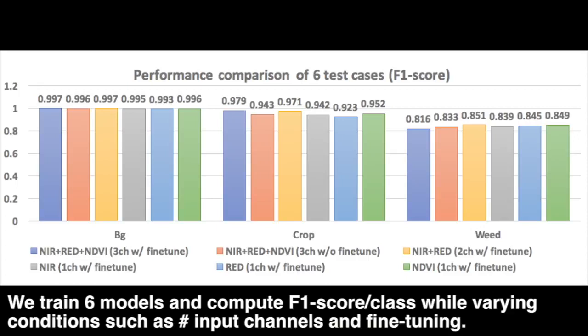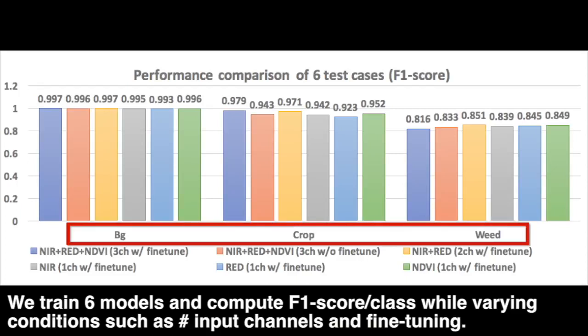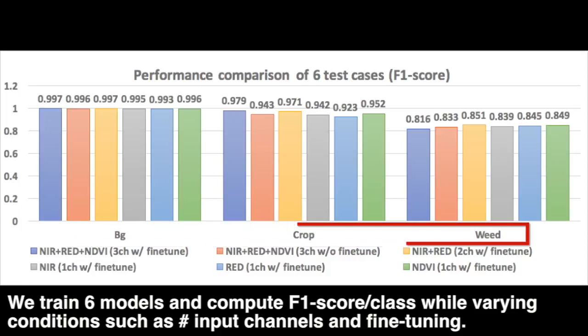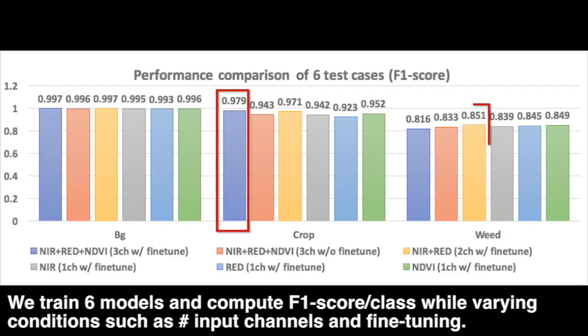For quantitative study, we used two performance metrics: F1 score and area under the curve, AUC. Ninety testing images with ground truth are used for all model performance evaluations. We trained six models with variable conditions, such as the number of input channels and whether fine-tuning is performed or not. F1 score is computed for each class — background, crop, and weed. Overall, the six models achieved reasonably high accuracy, with the three-channel model in dark blue and two-channel model in yellow slightly outperforming the others.